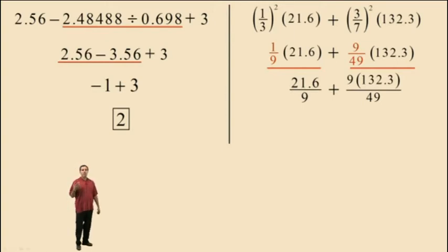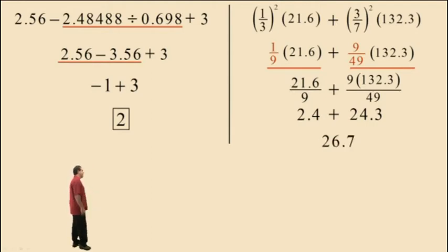Now you want to perform these calculations separately with your calculator. Remember the last step we have to do is add. So 21.6 divided by 9 should give you 2.4 and 9 times 132.3 divided by 49 should have given you 24.3 and when you add 2.4 with 24.3, you should have got 26.7 for your final answer.